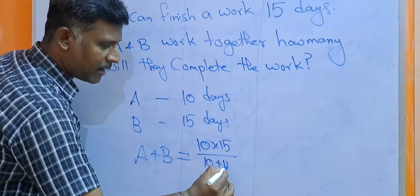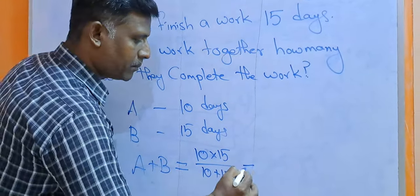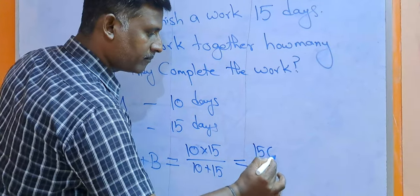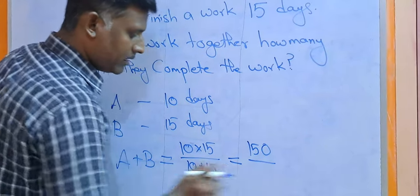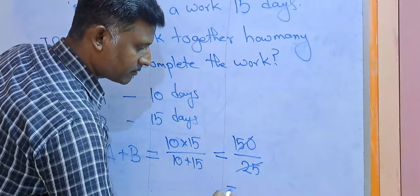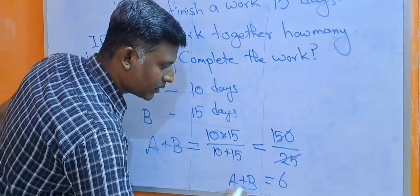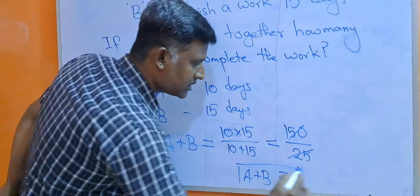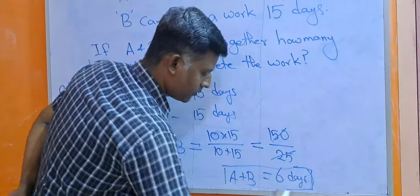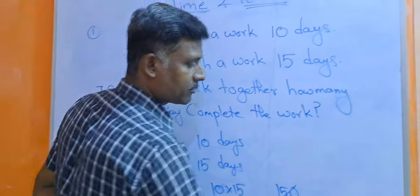In the numerator, you can add two pairs; in the denominator, you can add two pairs. Working together, just six days later — the answer is six days. Thank you.